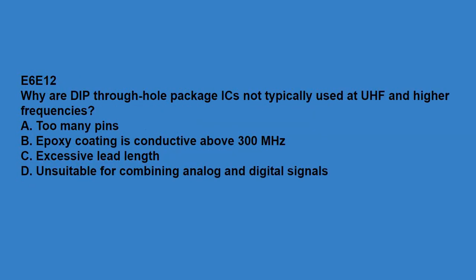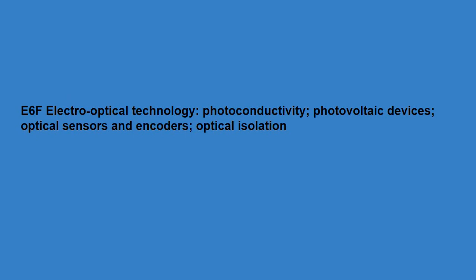E6E12: why are DIP through-hole package ICs not typically used at UHF and higher frequencies? Excessive lead length. E6F covers electro-optical technology, photoconductivity, photovoltaic devices, optical sensors and encoders, and optical isolation.